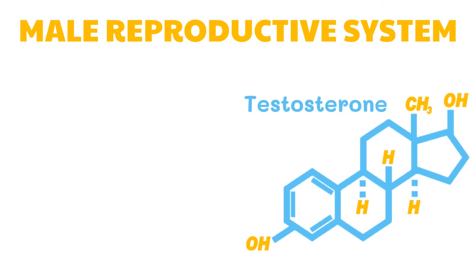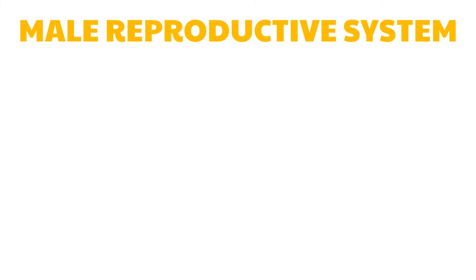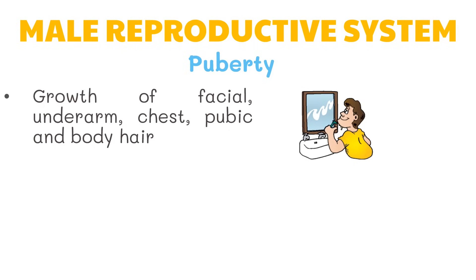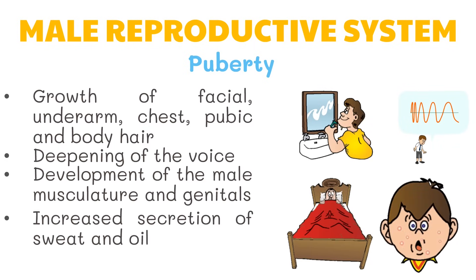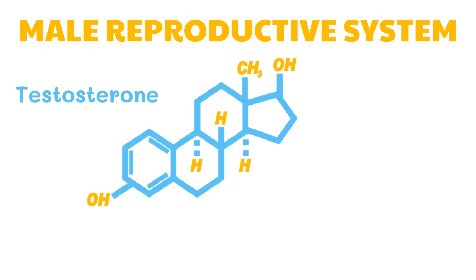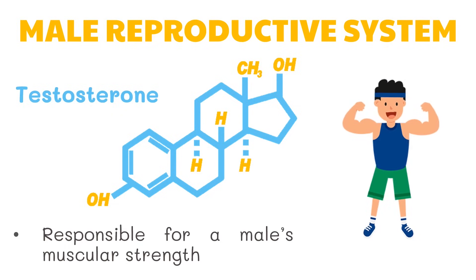Testosterone is the main male sex hormone secreted by the testes. This hormone is responsible for the normal development of the organs of the male reproductive system and also brings about the changes experienced during puberty. The changes that appear at 10 to 14 years of age eventually distinguish the male secondary characteristics, which include growth of facial, underarm, chest, pubic, and body hair; enlargement of the voice box resulting in deepening of the voice; development of the male musculature and genitals; and increased secretion of sweat and oil resulting in acne. Moreover, testosterone is responsible for male muscular strength. This is why some athletes take steroids that contain testosterone or other similar compounds. However, taking steroids has been proven to produce harmful effects and may even result in mental problems.